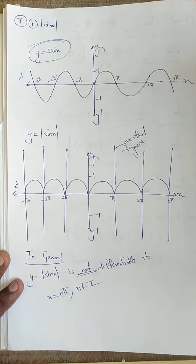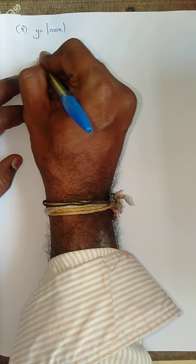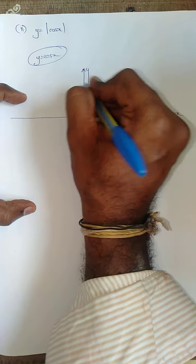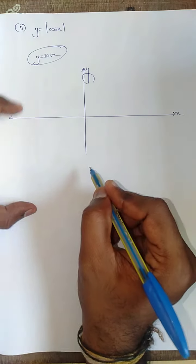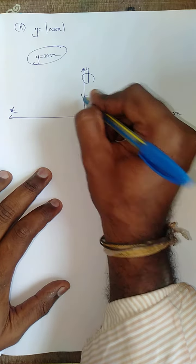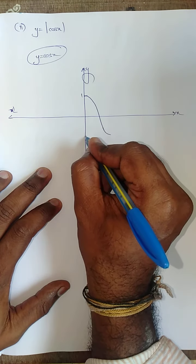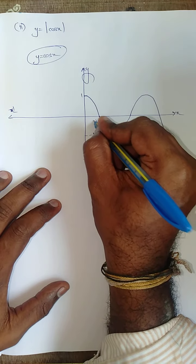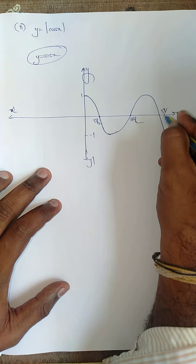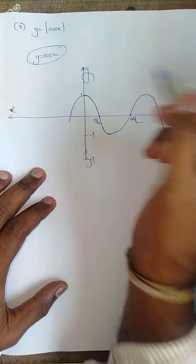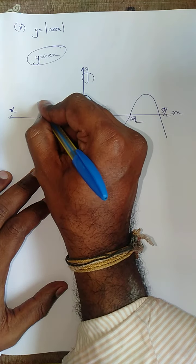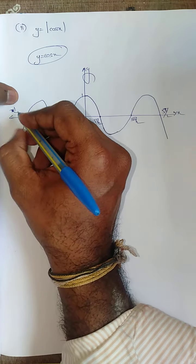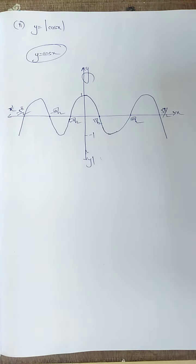Next, the second sub-question. For this also, first we will draw y equals cos x. So: x, y, x dash and y dash — it starts from one, reaches π/2, this will be minus one, moves once again, reaches 3π/2, once again comes to 5π/2. So this is π/2, this is 3π/2, this is 5π/2. The same here also — this comes at π/2 and moves like this. This is minus π/2.